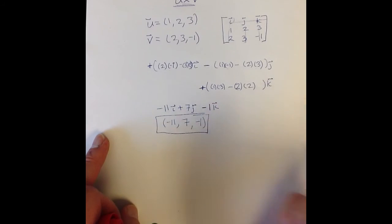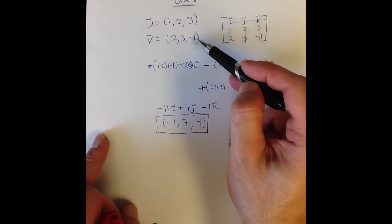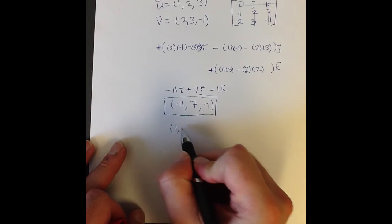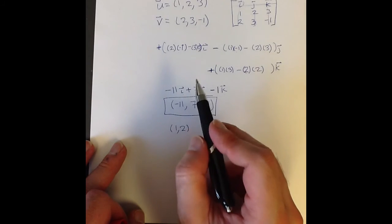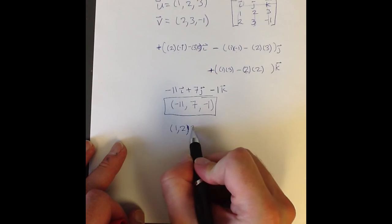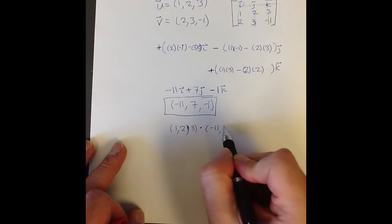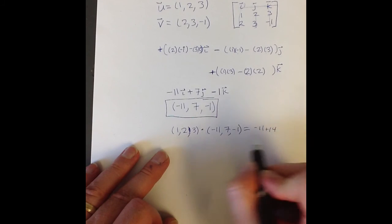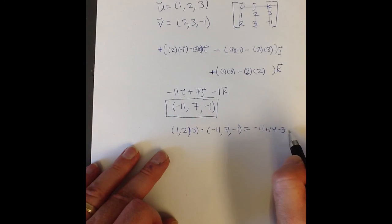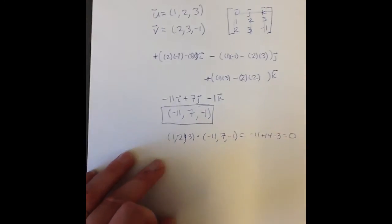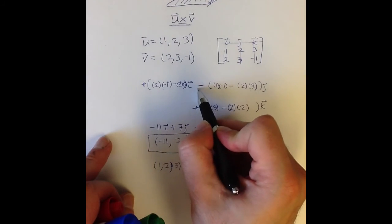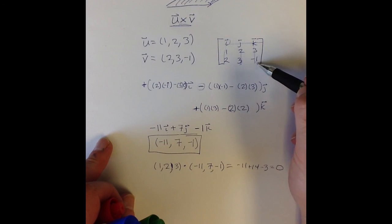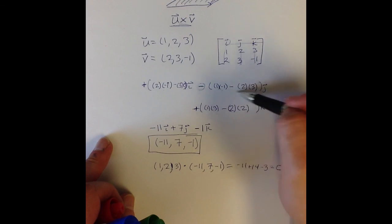We can check that orthogonality holds. The claim is that (-11, 7, -1) is perpendicular to both u and v. Dotting u = (1, 2, 3) with (-11, 7, -1): -11 + 14 - 3 = 0. That is indeed 0. A common mistake is to forget the negative sign on the middle component. When computing the j component, do your pattern — 1×(-1) minus 2×3 — and then subtract that whole result. That gives us a vector perpendicular to both u and v.